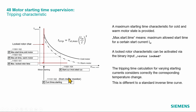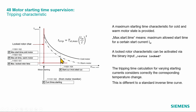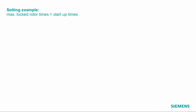An important note: we have here an inverse time curve based on the square of the measured current. However, this is not a simple inverse time curve — we integrate the time depending on the current. So if we run up and the current jumps, we don't just cross the line and issue a trip. We adapt proportionally, so it truly represents the thermal and temperature behavior.